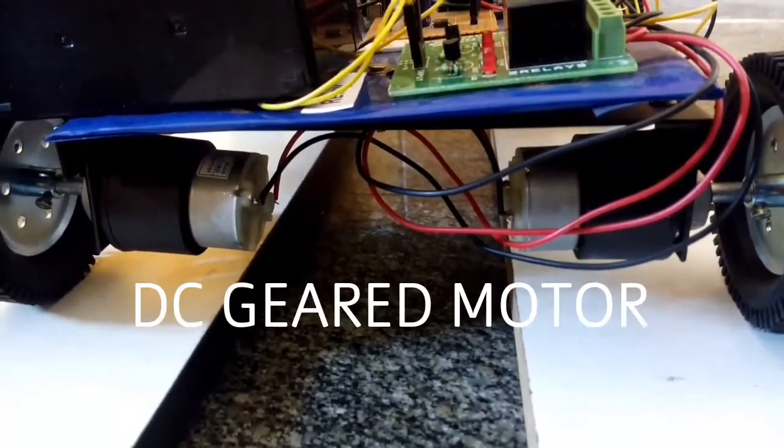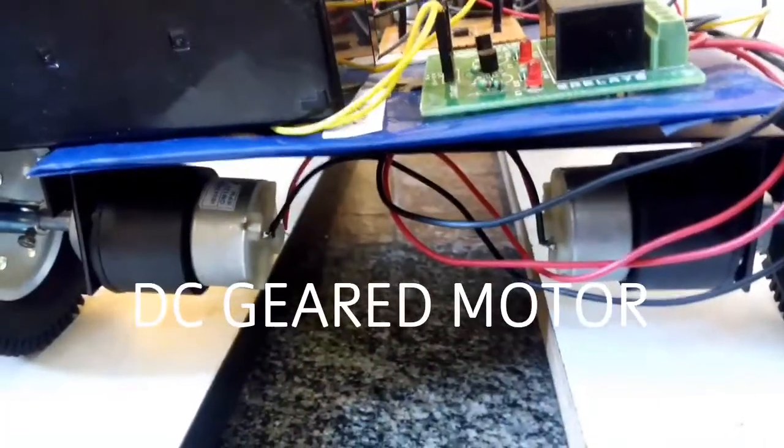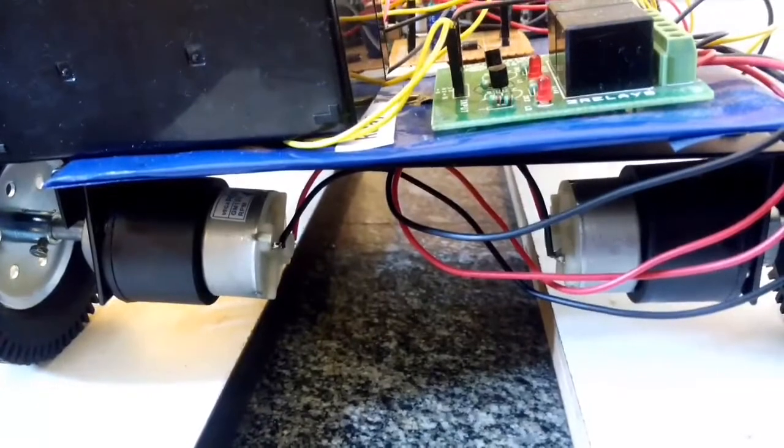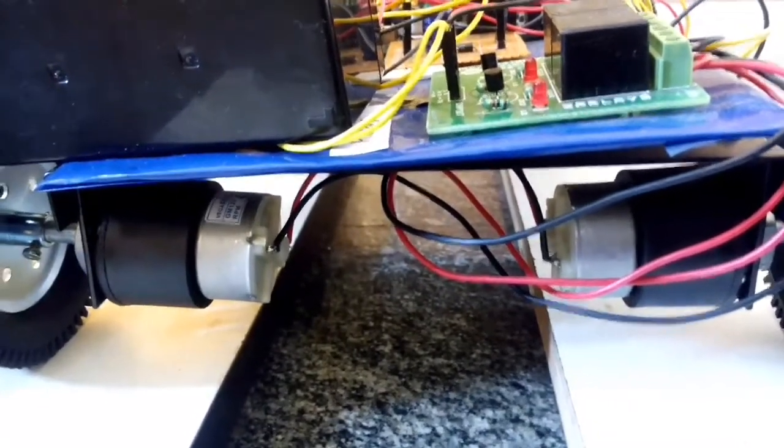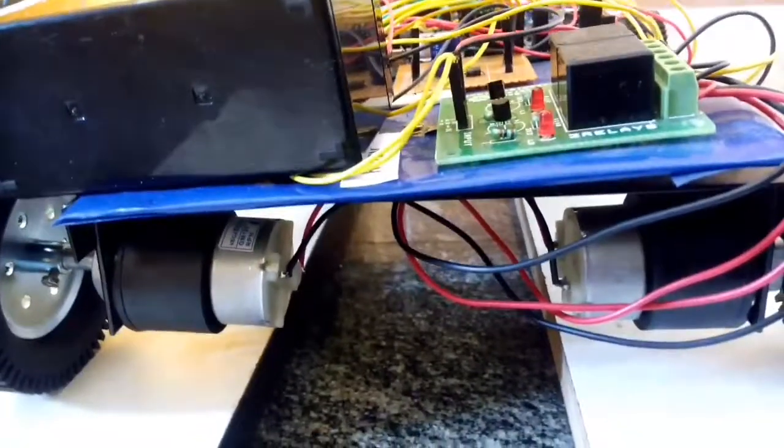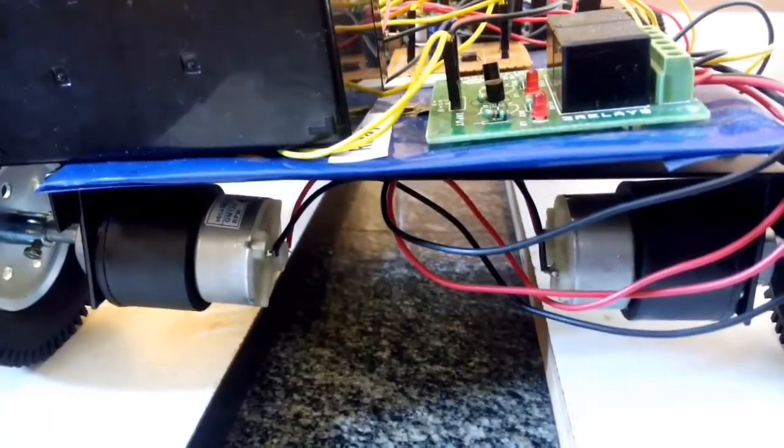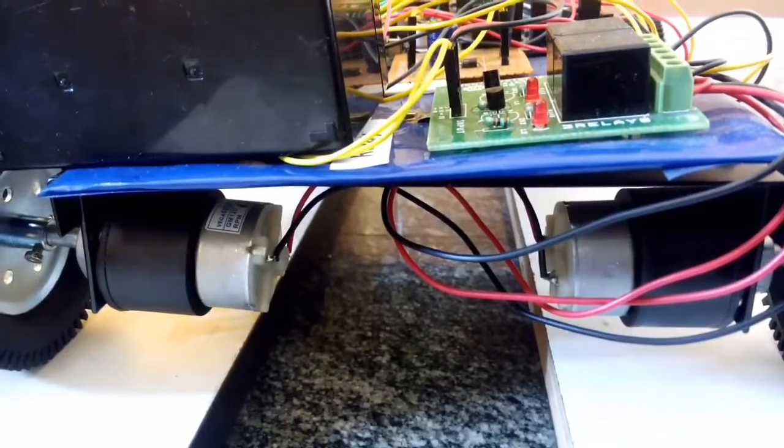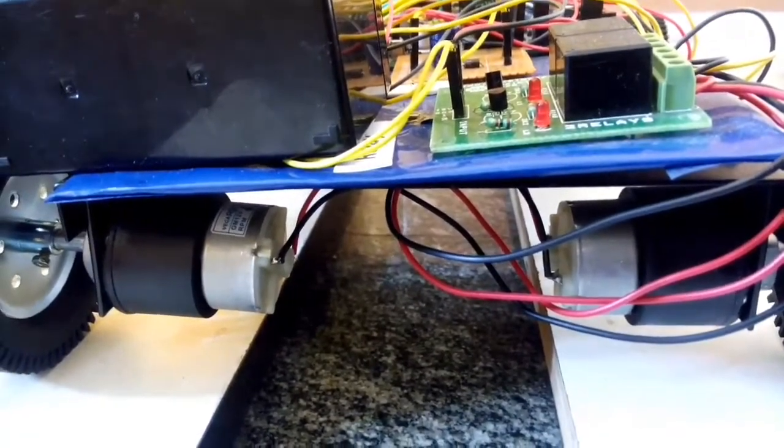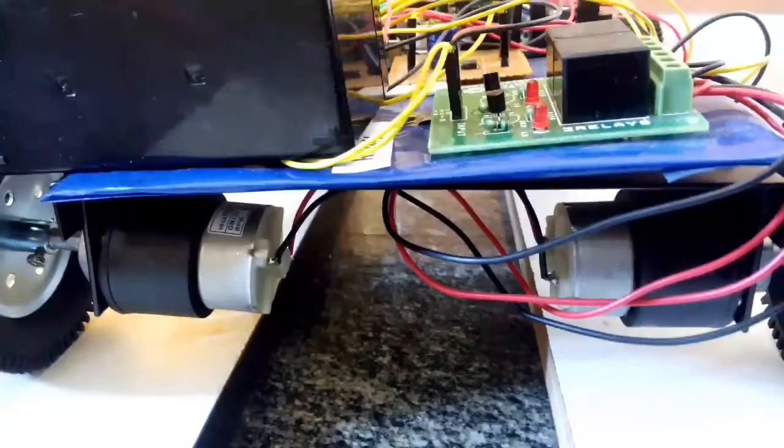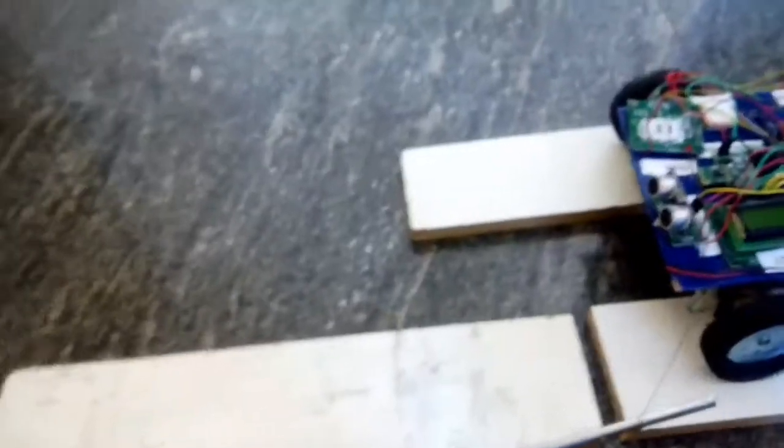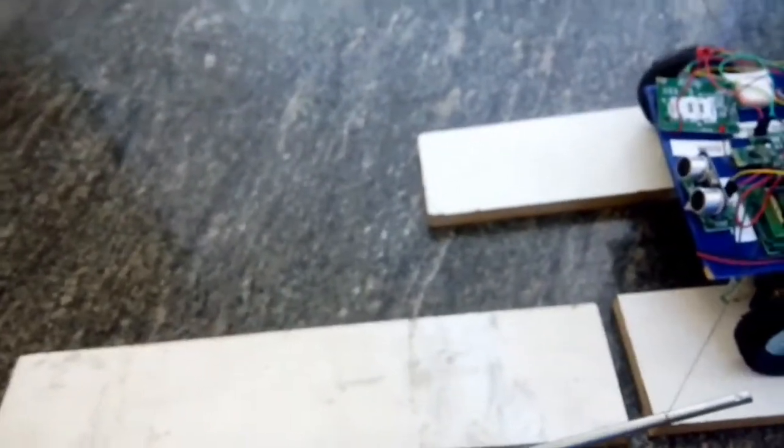DC geared motors are connected to two wheels of the robot to drive the robot. It runs at 60 RPM. It is connected to microcontroller through relay. Its operating voltage is 12V. These are the hardware components used in robot section.